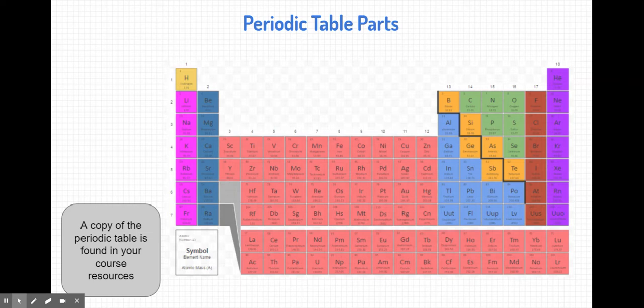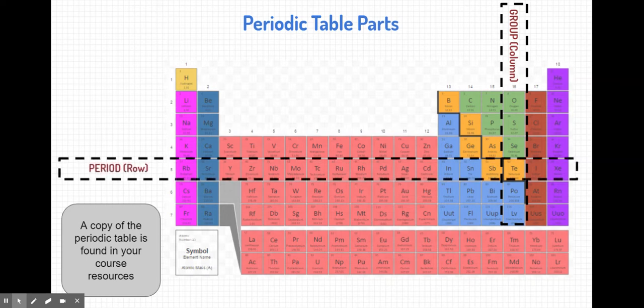The periodic table has different parts that we as scientists use to discuss with each other. For example, a column on the periodic table is what we call a group. On the periodic table, there are 18 groups. A row is typically called a period, and there are seven periods currently on the periodic table.